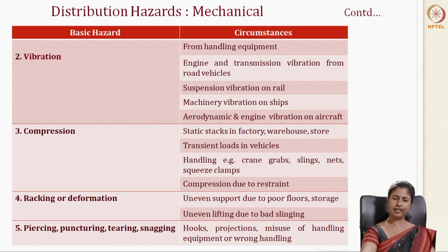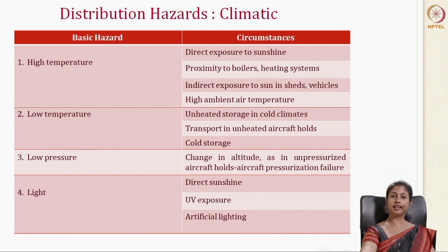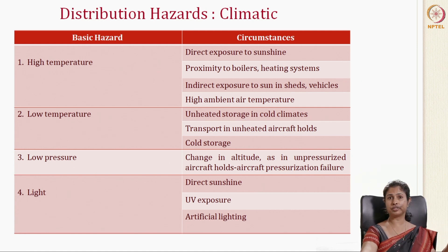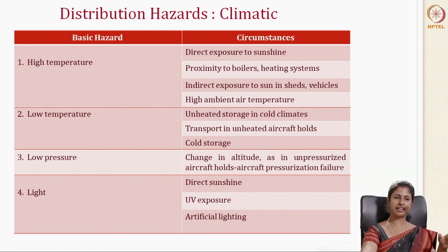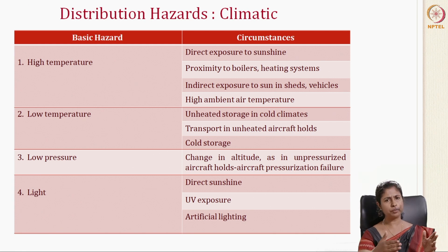So the number one distribution hazard is mechanical hazard. The second important one is climatic hazard. Different modes of transportation are used, and whether by air, ship, river, or rail, all will have climatic effects. High temperature is one — direct exposure to sunshine, proximity to boilers or heating systems in a factory, and indirect exposure to sun in sheds and vehicles can all affect packaging. High ambient air temperature in summer also has an effect.